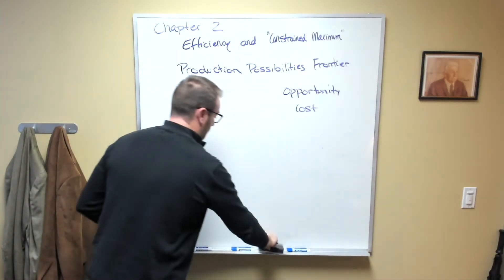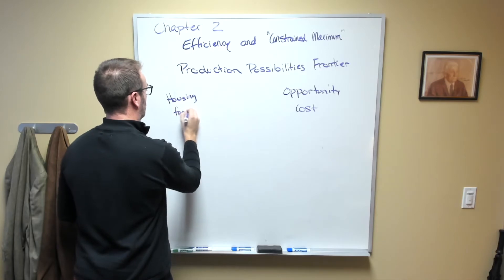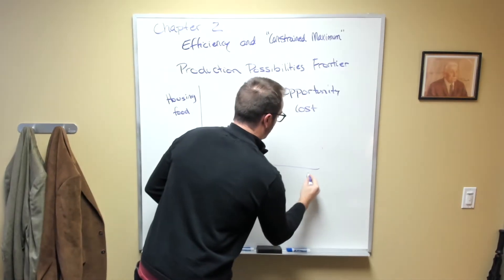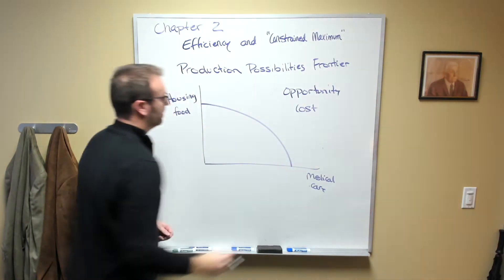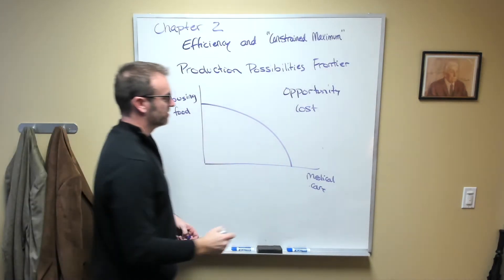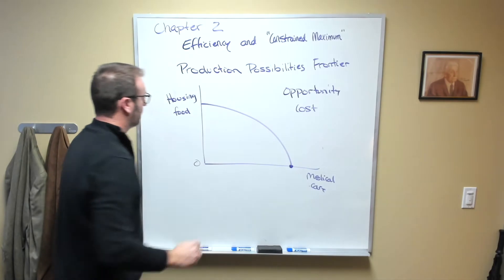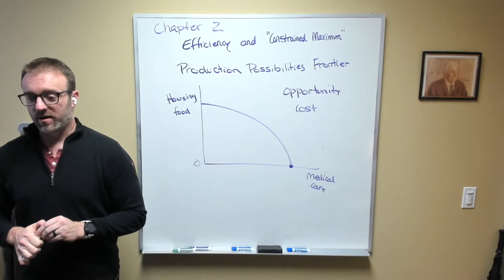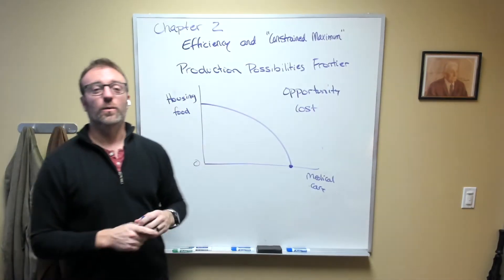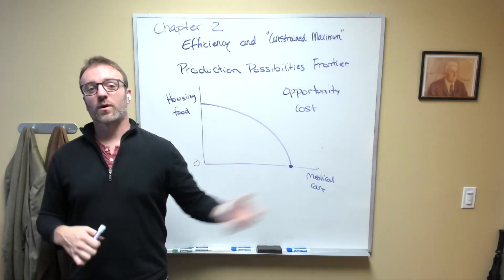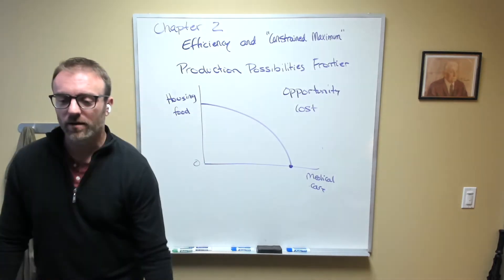We can think of perhaps housing or food as being on this axis here and medical care on this axis here. We should still have a concave production possibilities frontier. If we were here where we're maximizing the amount of medical care, that means we have zero housing and zero food. While we would all have affordable access to medical care because we could provide our own medical care to ourselves, we would have nowhere to live and nothing to eat. That doesn't really sound like such a great society.